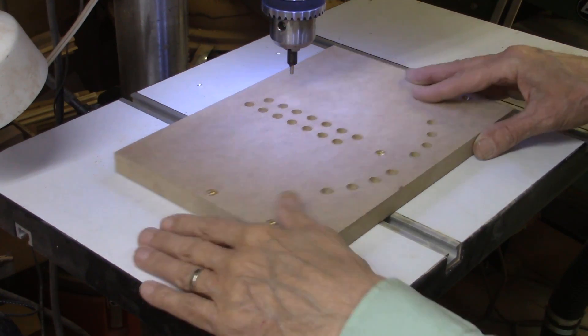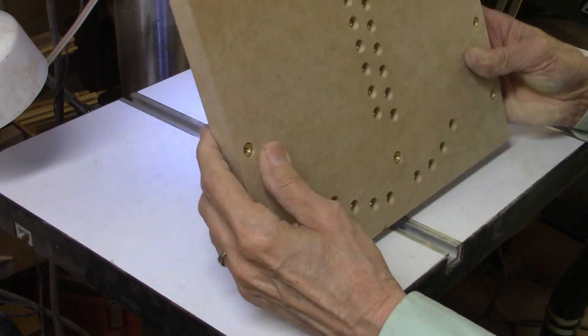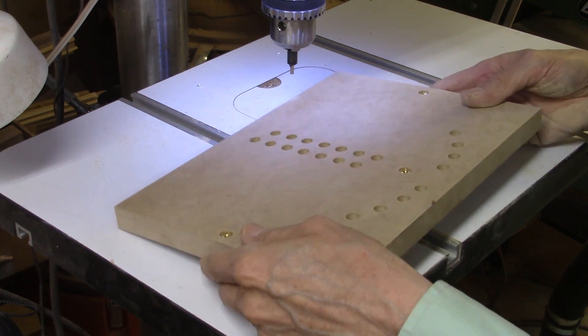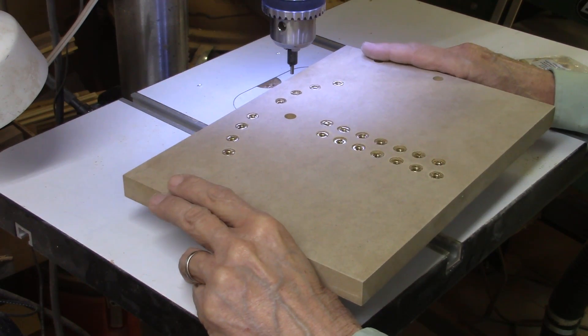Okay, that completes the backboard for the clamping sacrificial fence. So now it's on to the offset cam.